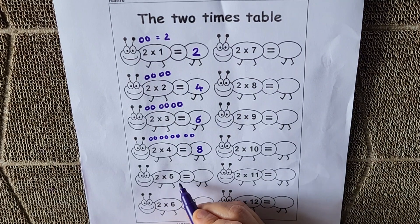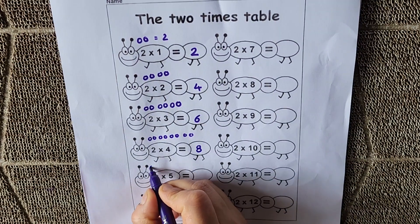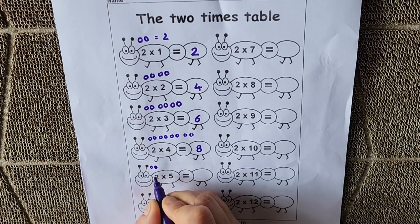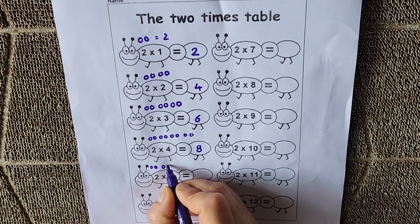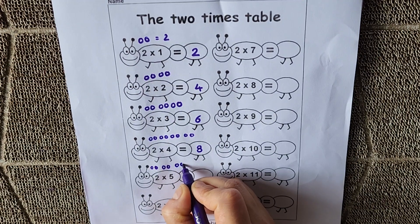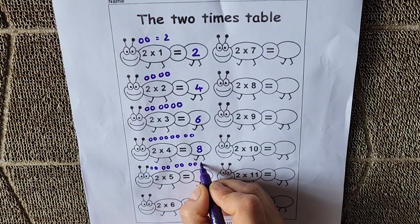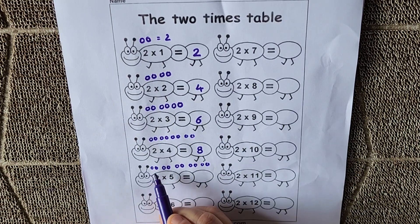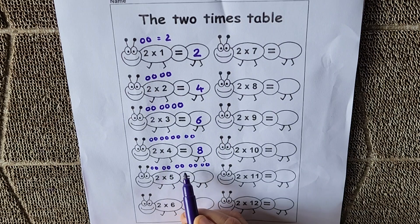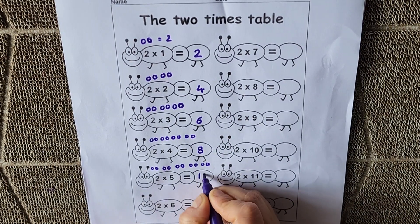Next, 2 5s are 10. 2 balls how many times? 5 times. 1 time, 2 times, 3 times, 4 times and 5 times. So total number of balls are 1, 2, 3, 4, 5, 6, 7, 8, 9, 10. So 2 5s are 10.